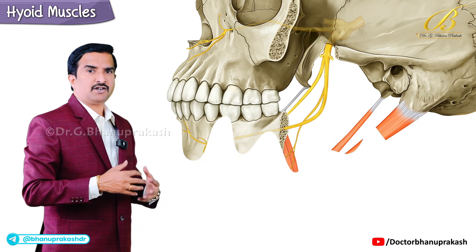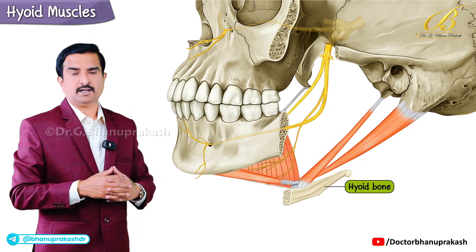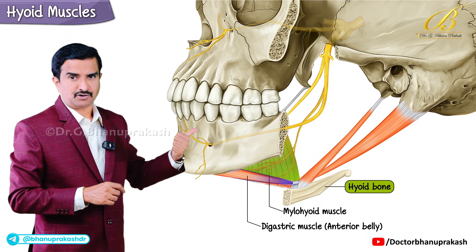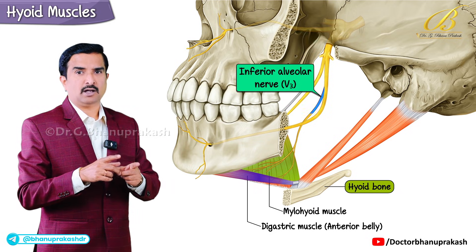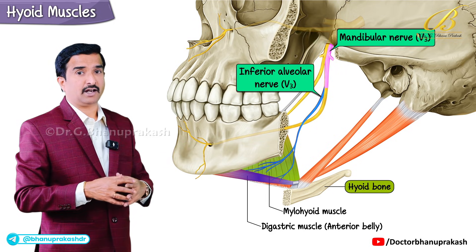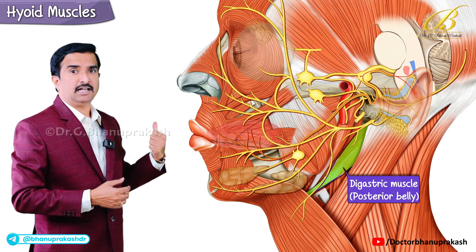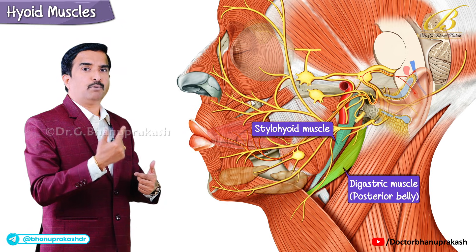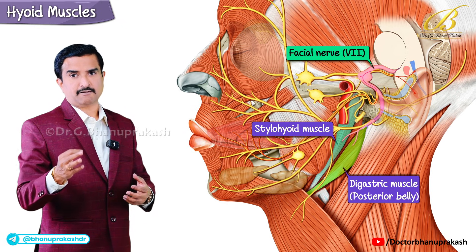The innervation here is a bit of a mix, so pay attention. The mylohyoid and the anterior belly of the digastric are innervated by the inferior alveolar nerve, which is a branch of the mandibular nerve — that is cranial nerve V3. The posterior belly of the digastric and the stylohyoid are both innervated by the facial nerve, which is cranial nerve 7.